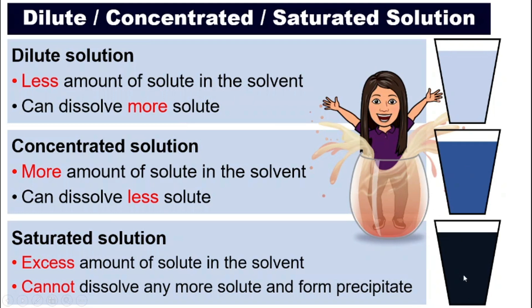So to summarize using sugar water as an example: dilute solution will be the least sweet, just a little bit sweet. The concentrated solution will be sweeter. And the saturated solution of sugar — I don't think I want to even taste it — it will be very, very, super extremely sweet. So you get the idea: dilute solution, concentrated solution, and saturated solution.